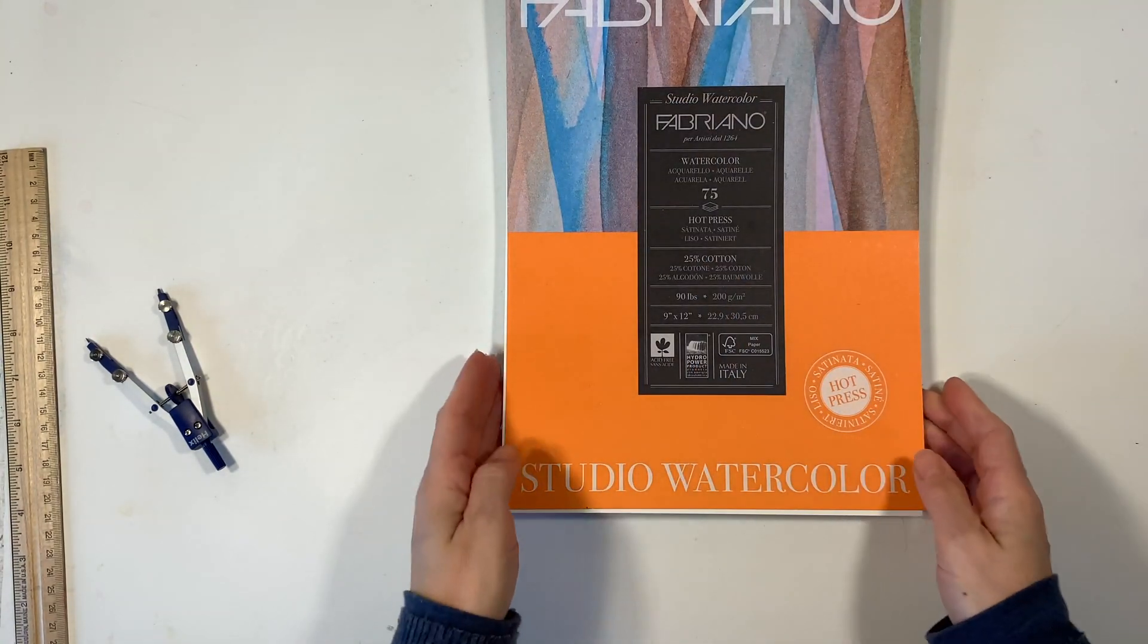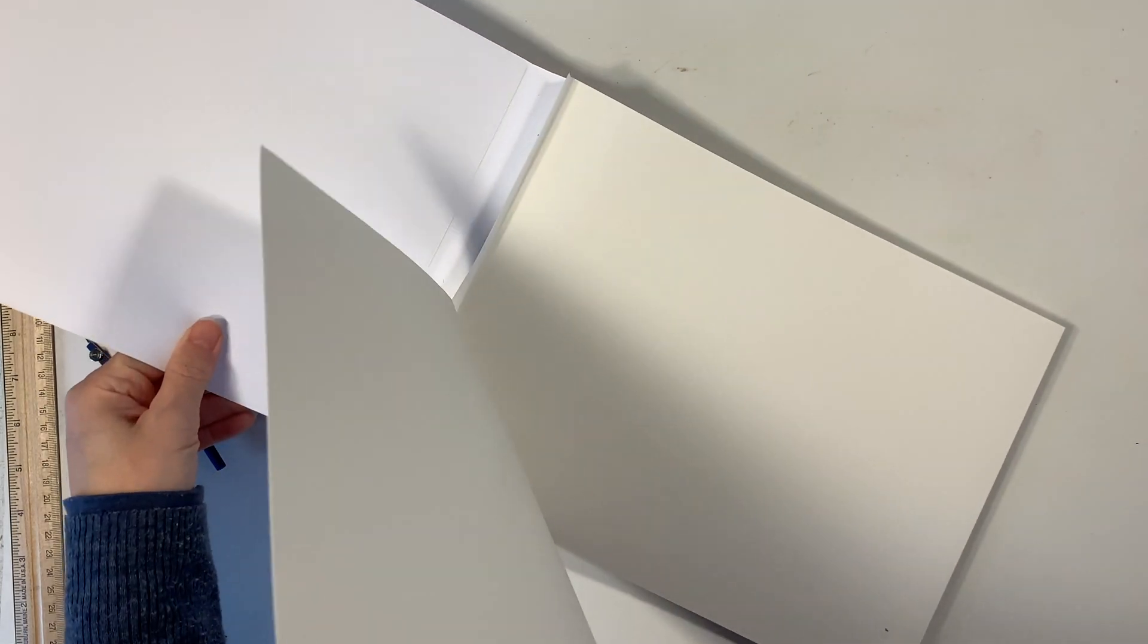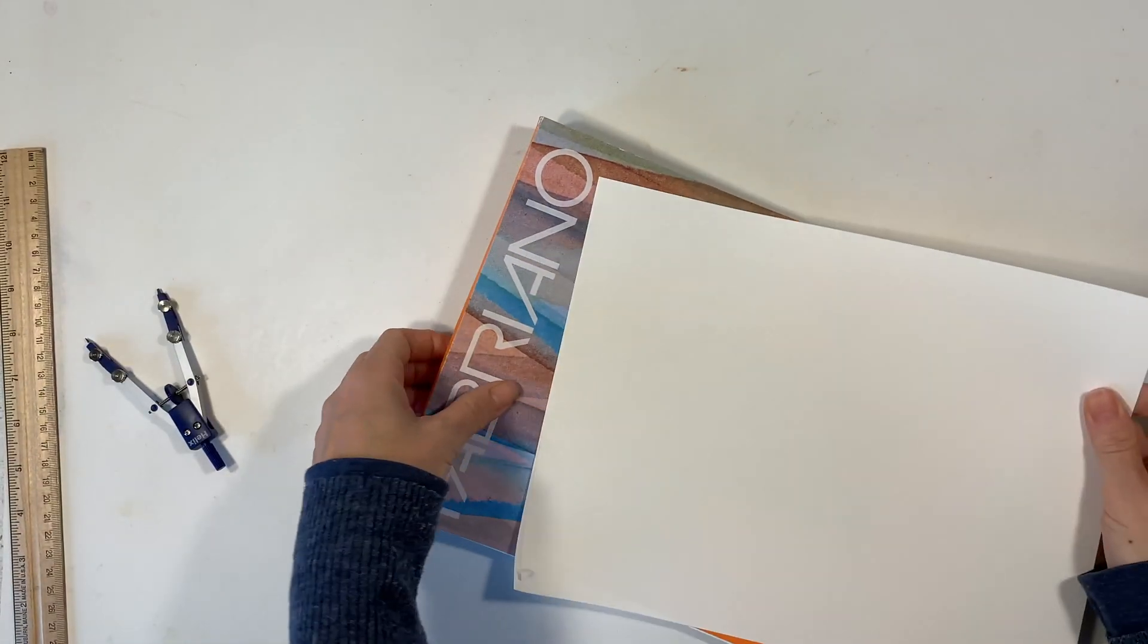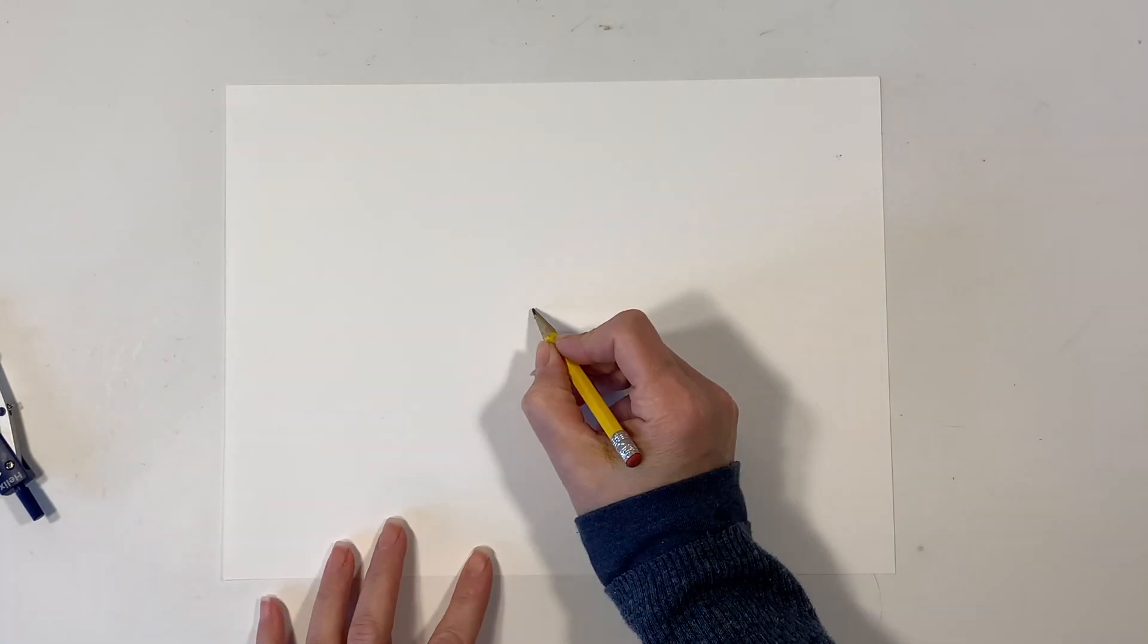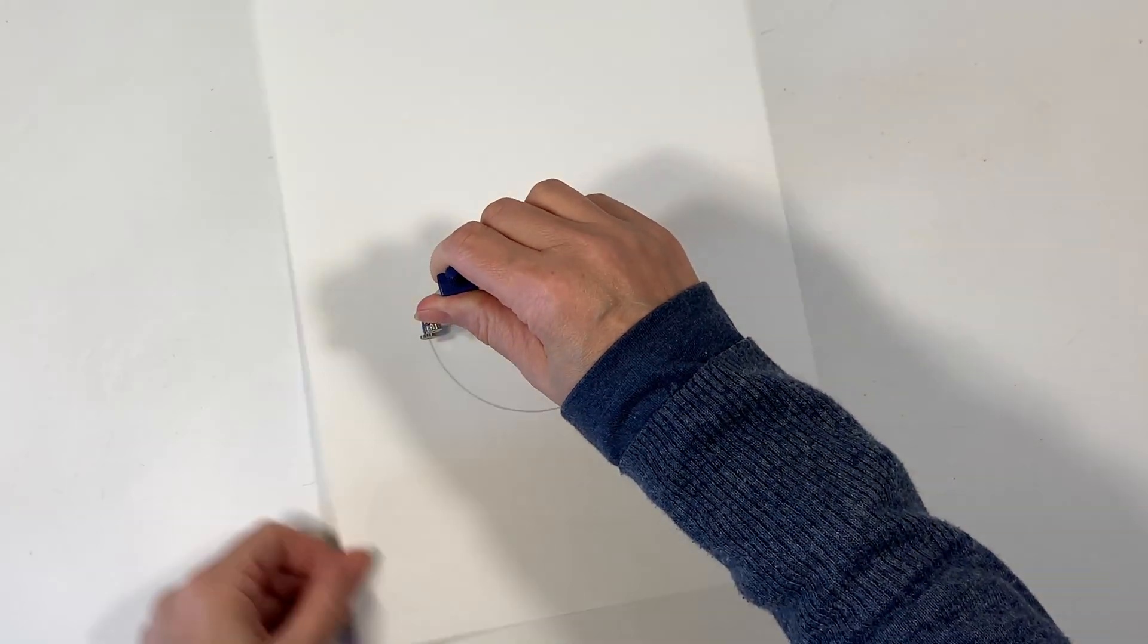So I'm going to be using my Fabriano watercolor paper. This is 90 pound hot press watercolor paper. It has a nice smooth finish. I'm going to eyeball the center of the page and mark it and then I'm going to set my radius to 5 centimeters.